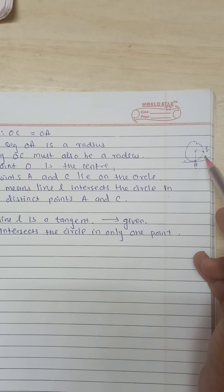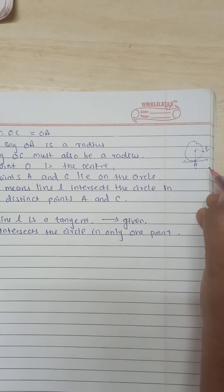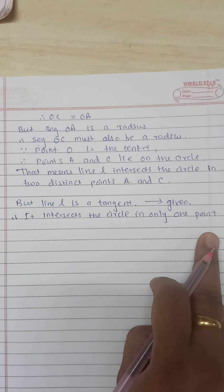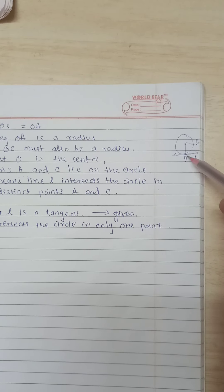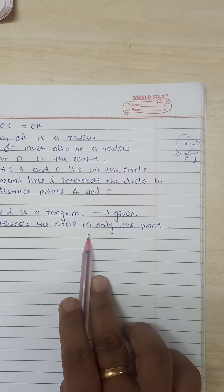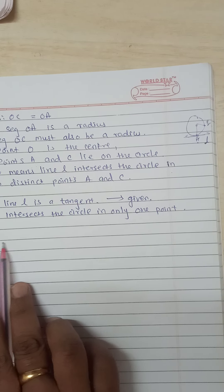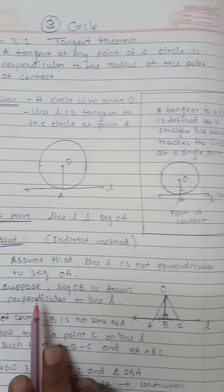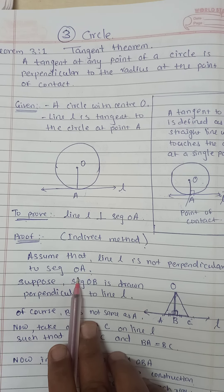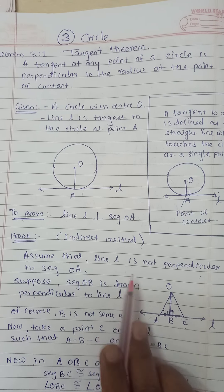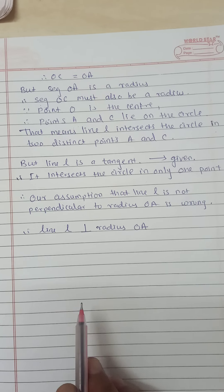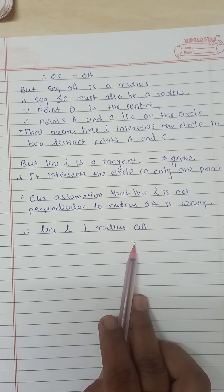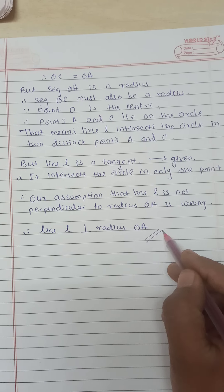But it is given that line L is a tangent, and a tangent intersects the circle in only one point — it cannot touch the circle at two points. So the assumption that L is not perpendicular to OA is wrong. Therefore, line L is perpendicular to the radius OA. This completes the proof.